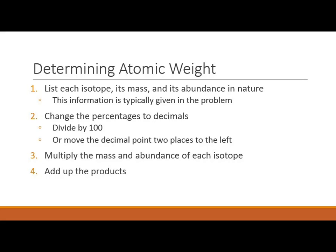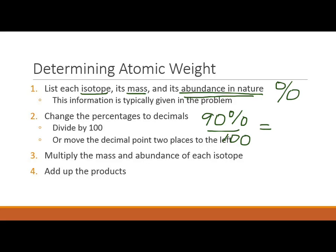To calculate atomic weight, we need each isotope, the mass of each, and the percent abundance in nature — all typically given in the problem. First, convert each abundance percentage into a decimal by dividing by 100, or moving the decimal two places left. Then multiply each isotope's mass by its decimal abundance, and finally add up all those products.